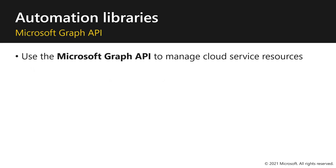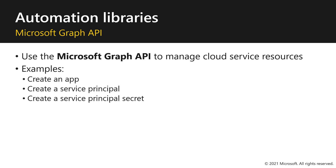Use the Microsoft Graph API to manage cloud service resources. For example, it can be used to create an app, create a service principal, and create a service principal secret. Note that these operations are also available with the Azure command line interface.